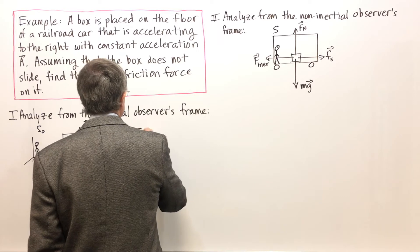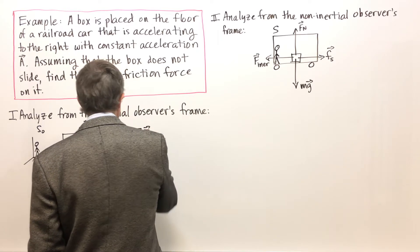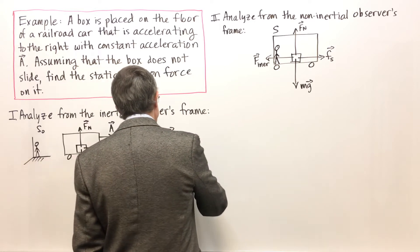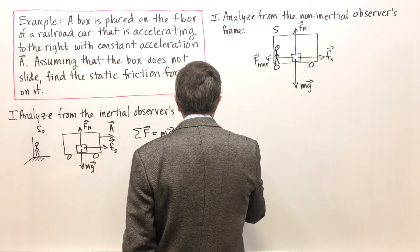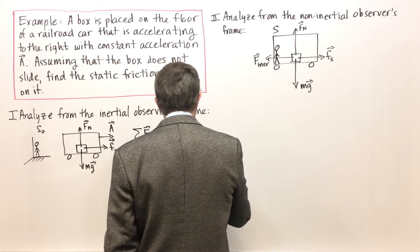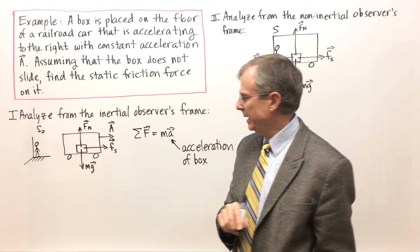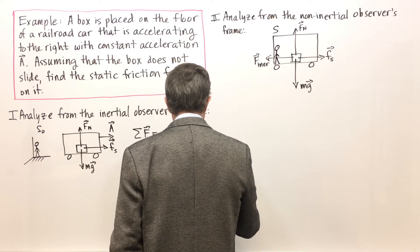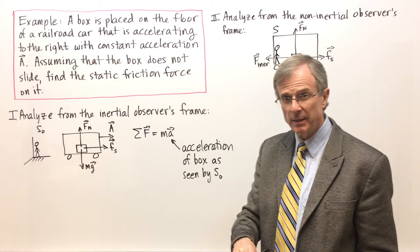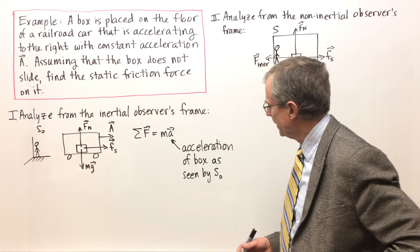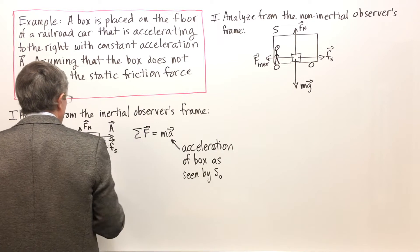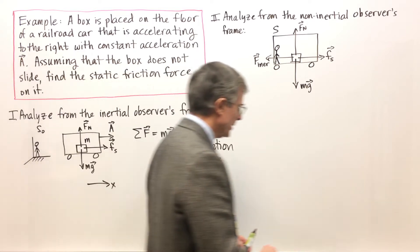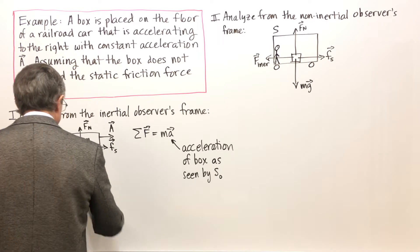Well we can apply Newton's laws in this inertial reference frame. So this A here is the acceleration of the box as seen by this observer, the observer standing on the ground watching the accelerating car. M is the mass of the box. So if we take the x direction like this, let me write this out.